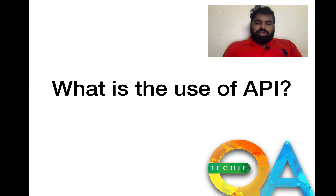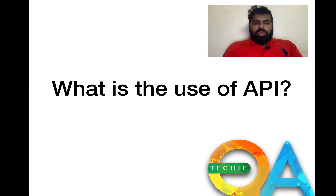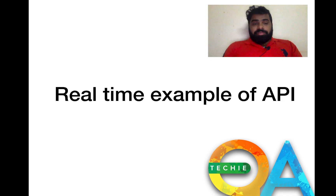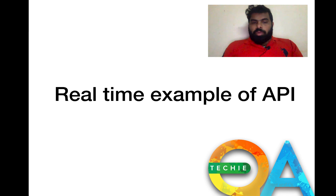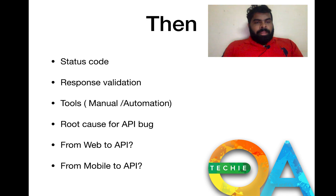You should give a real-time example in the interview — that's what shows the interviewer you actually understand API and have tested it. If you only say 'I got a URL and triggered it from a tool and checked the response,' that's the most basic real-time example. If you can't give a real-time example, you probably don't understand API and API testing properly.